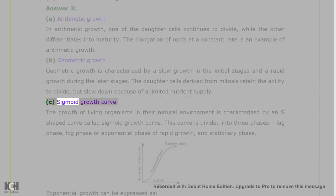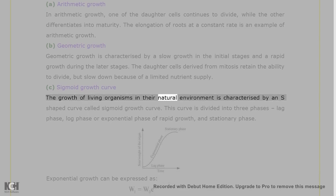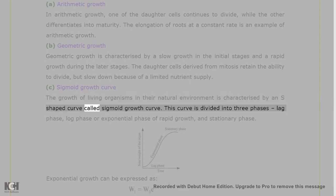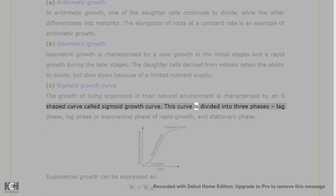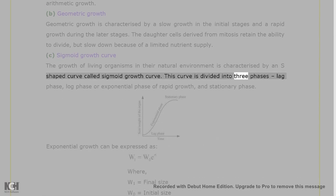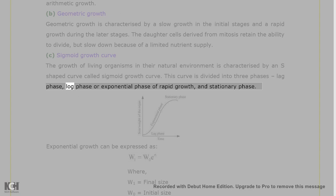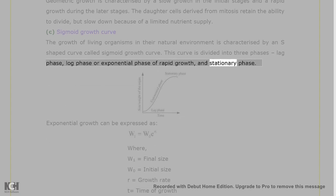C. Sigmoid growth curve: the growth of living organisms in their natural environment is characterized by an S-shaped curve called sigmoid growth curve. This curve is divided into three phases: lag phase, log phase or exponential phase of rapid growth, and stationary phase.